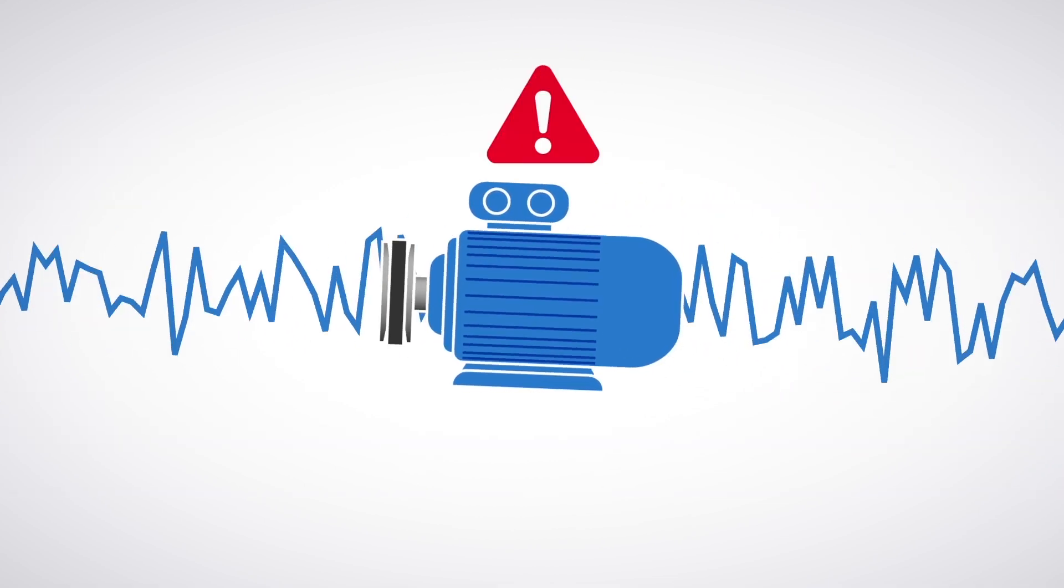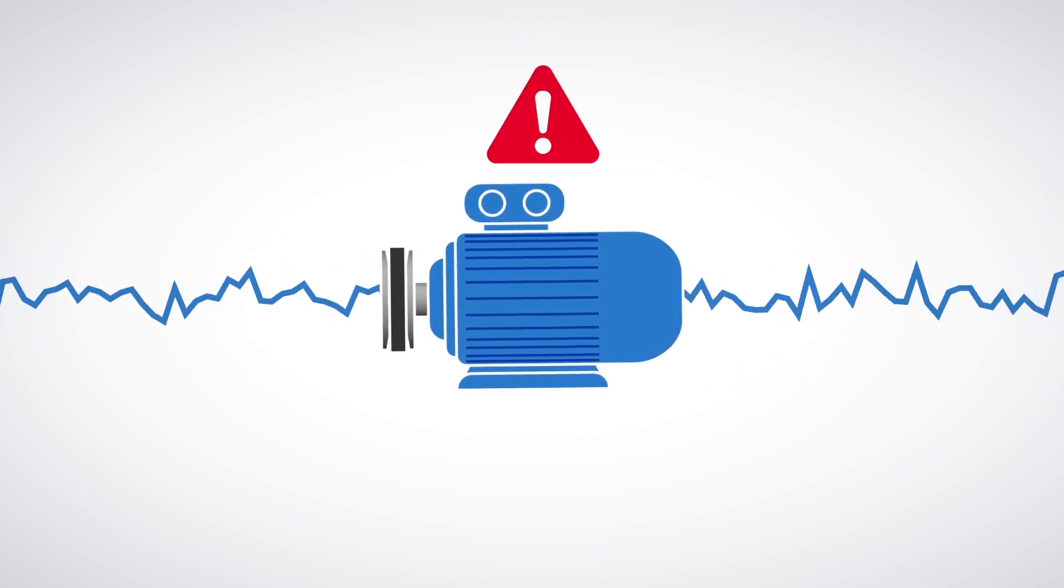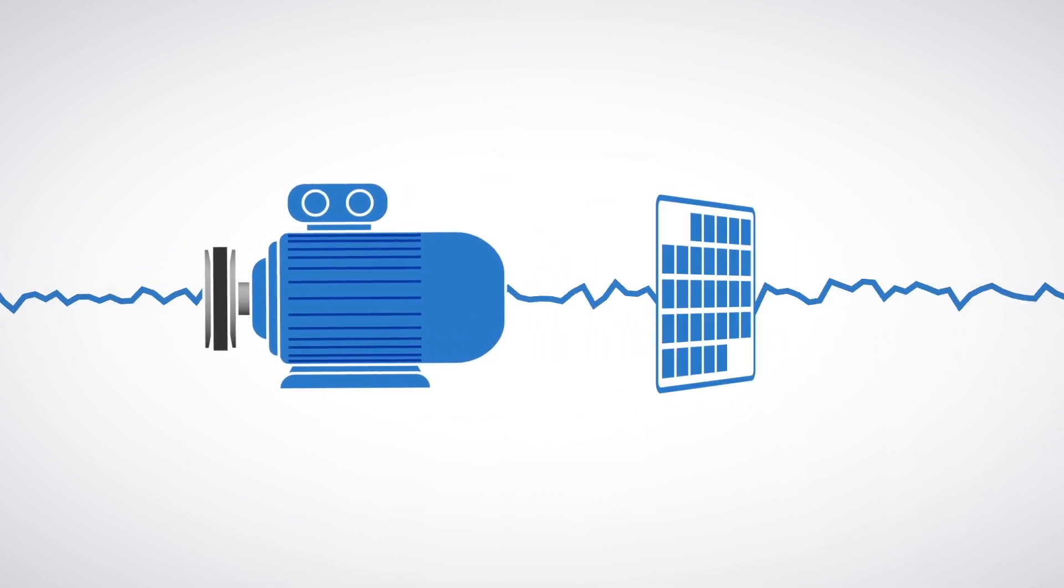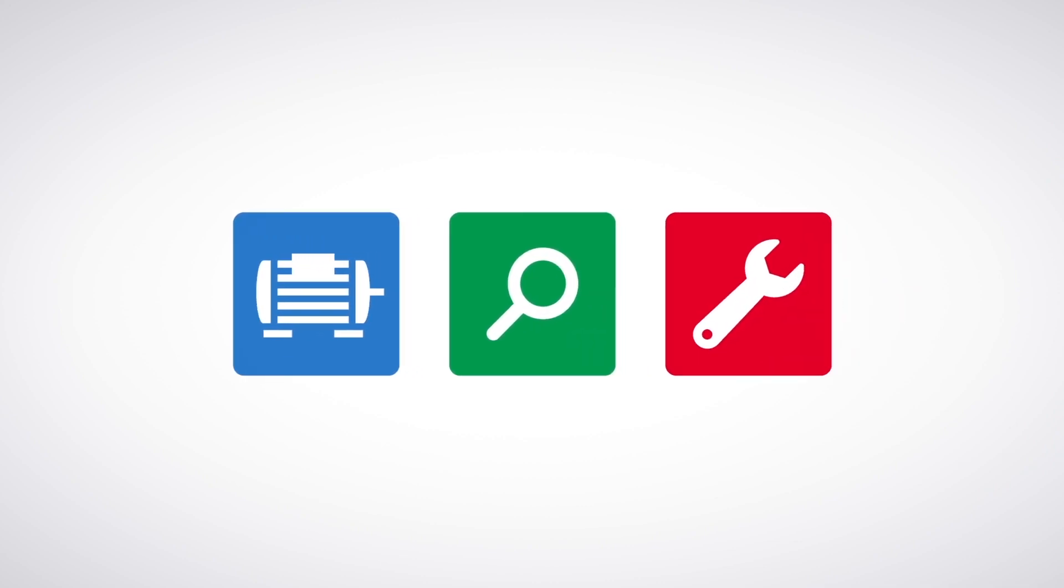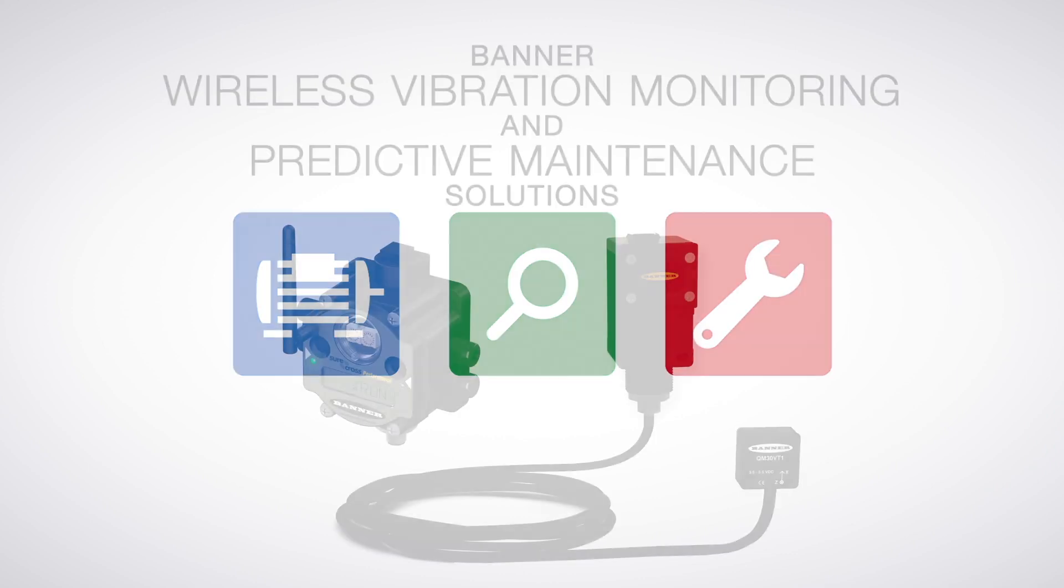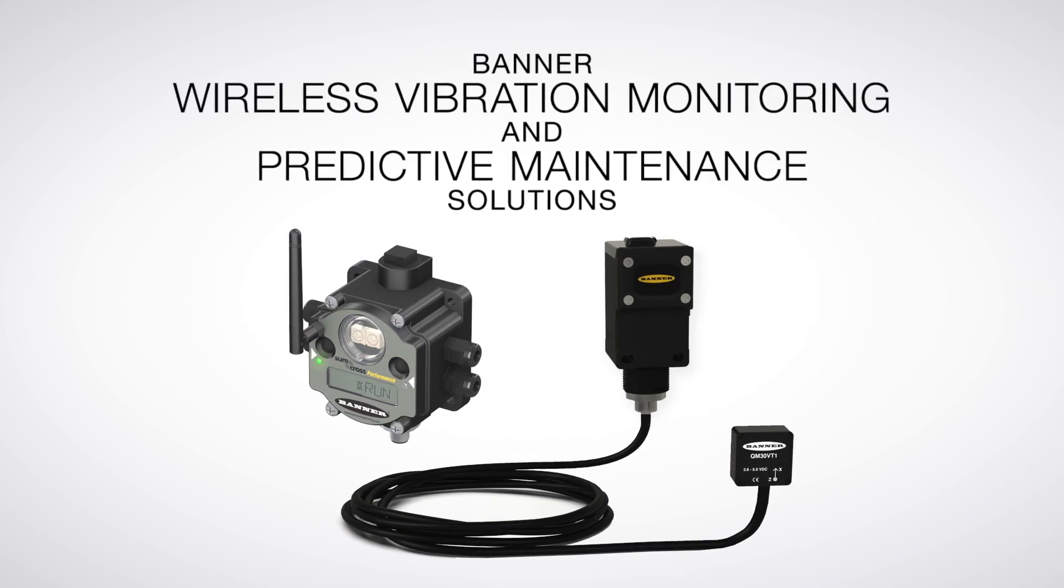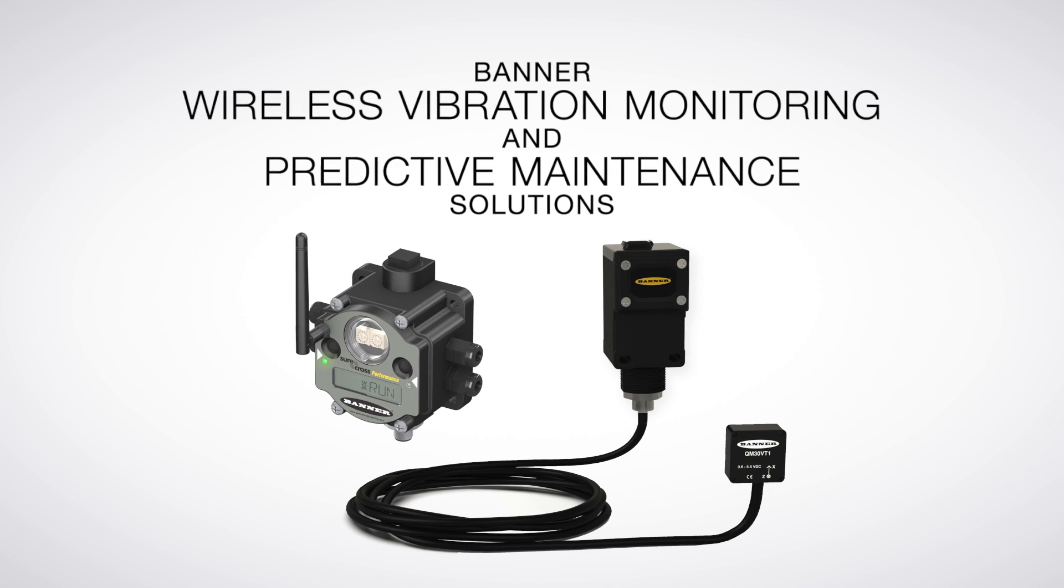It will alert you when your machine begins acting strange so you can schedule maintenance when it has the smallest impact on production. Monitor your machines, detect problems early, and avoid costly unplanned downtime with Banner's Wireless Vibration Monitoring and Predictive Maintenance Solutions.